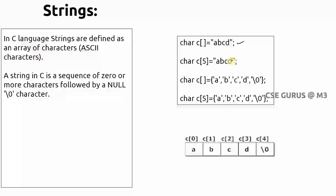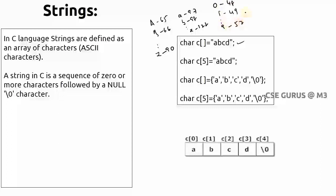Each symbol used in C has a particular ASCII value. Uppercase A is 65, uppercase B is 66, up to uppercase Z which is 90. Lowercase a is 97, lowercase b is 98, up to lowercase z which is 122. The digit 0 has ASCII value 48, 1 is 49, up to 9 which is 57. Special symbols also have ASCII values — for example, plus is 43. A string in C is a sequence of zero or more characters followed by a null character at the end.